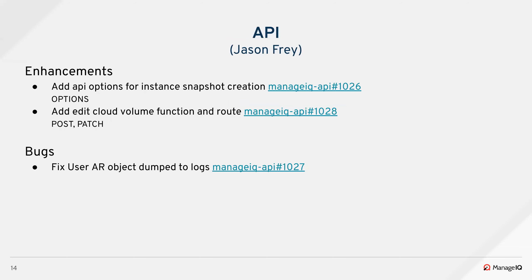On the API side for enhancements, Kavya added API options for instance snapshot creation, adding the options verb to the existing endpoint. She also added an edit cloud volume function and route, adding the POST and PATCH verbs to the cloud volume endpoint which already existed but was missing those for the UI. On bugs, Adam fixed an issue where the user's active record object would get dumped to logs directly but didn't have any real information in it, making it a pointless log. He made it print the actual information that was needed.